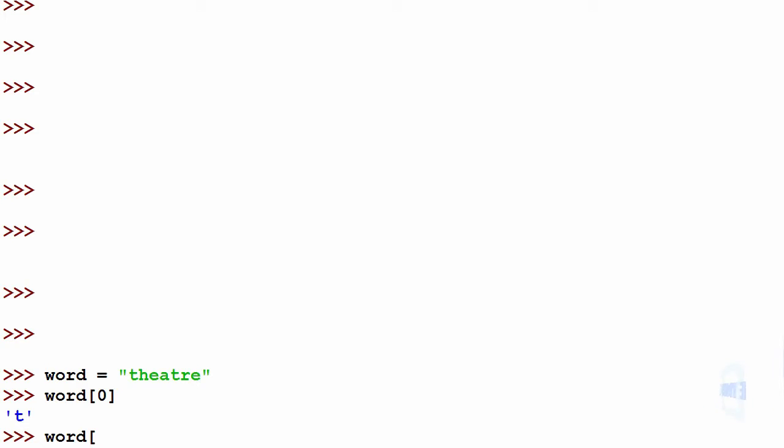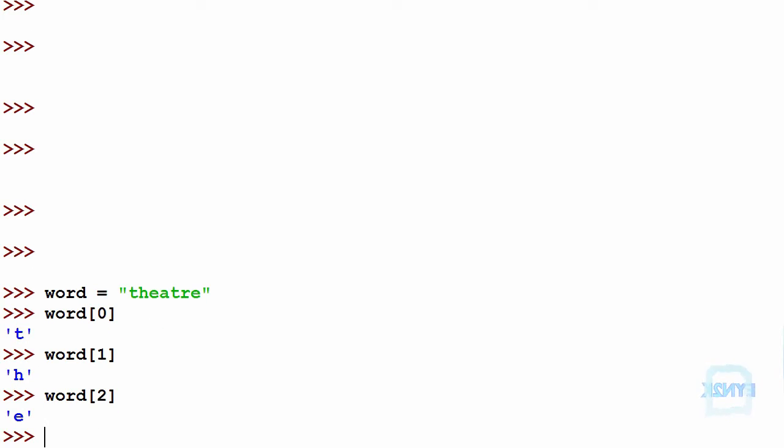Inside the braces, we can put the second value being 1, getting H. Inside the braces, we can put the third value being 2, getting E. So we want to get the word the from theatre, we go word from 0 to 3, because it does not include the top value of the range.